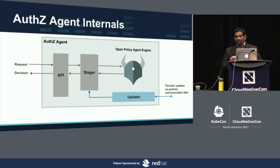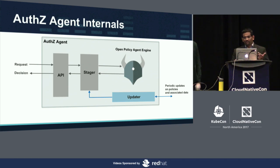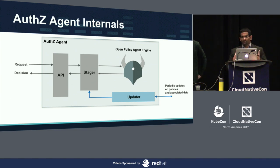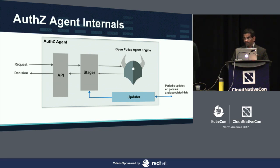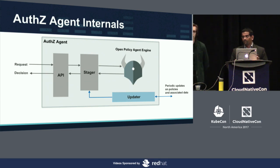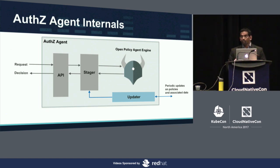If you zoom in a little bit into the agent itself, it has two paths: a hot path and an asynchronous path. The hot path is where the application makes a request for an authorization decision — whatever request is received for whatever resource passes that information to the policy engine. You can see here we are using the Open Policy Agent engine — Torin is going to talk more about it. And then we have a slow path, which is the blue path, which is downloading all this information periodically from distributors.